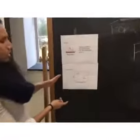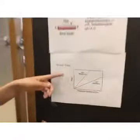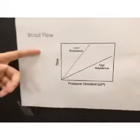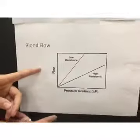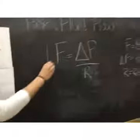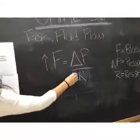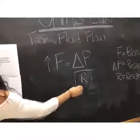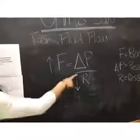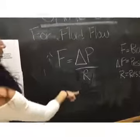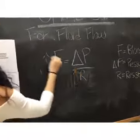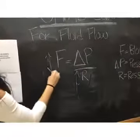As you can see in this diagram, F — which is the blood flow — and R — which is the resistance — are inversely proportional, meaning that when F goes up, R goes down. And vice versa: when R goes up, F goes down.